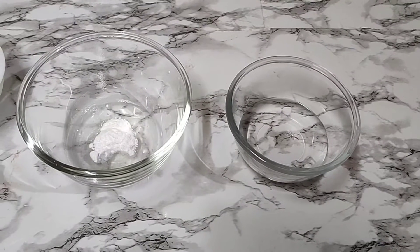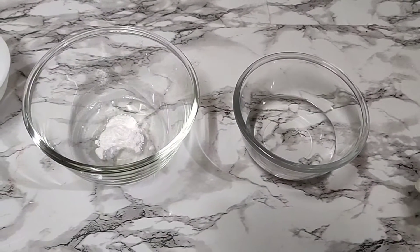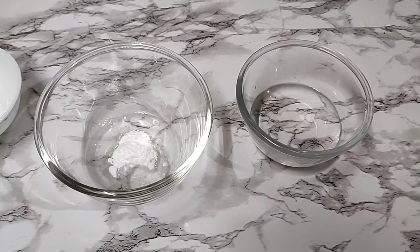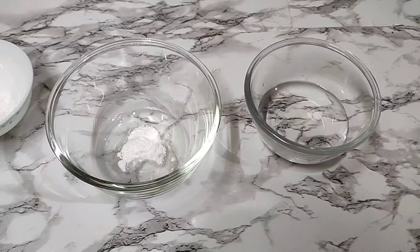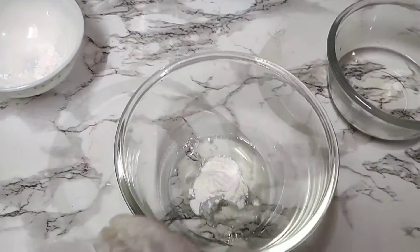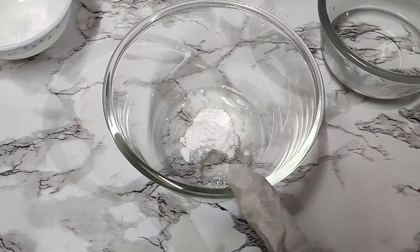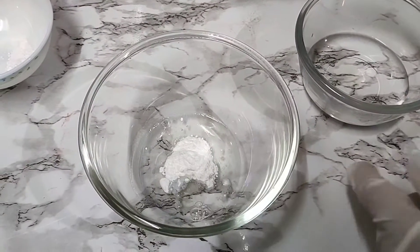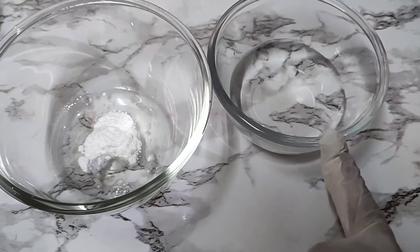Today we are going to be making a salicylic acid face wash and it's going to be a gel face wash. Here I have taken my blend of surfactants: my SCI powder, my cocamidopropyl betaine which is taken here, and here I have my water phase in which I have my water and my glycerin.